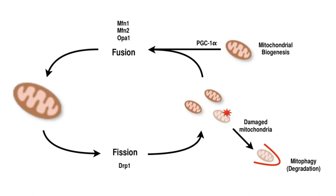The ability for a mitochondrion to self-replicate is rooted in its evolutionary history. It is commonly thought that mitochondria descend from cells that formed endosymbiotic relationships with alpha-proteobacteria, and they have their own genome for replication. However, recent evidence suggests that mitochondria may have evolved without symbiosis.